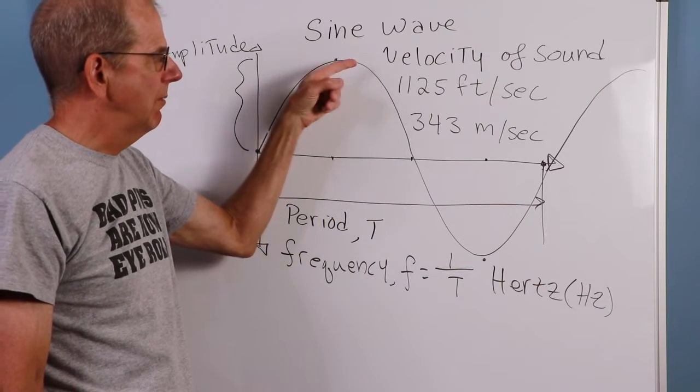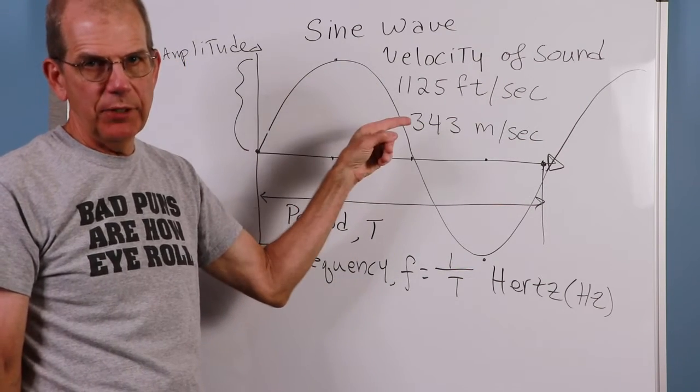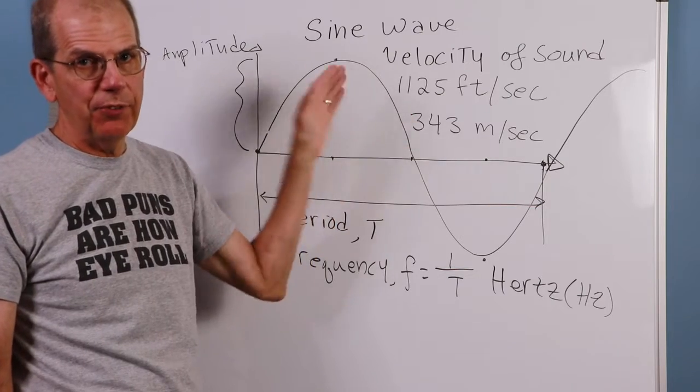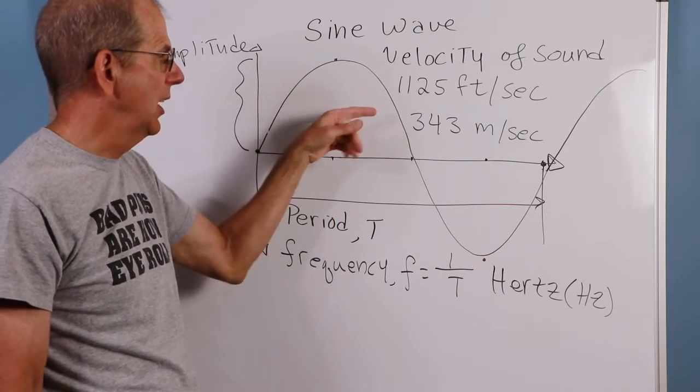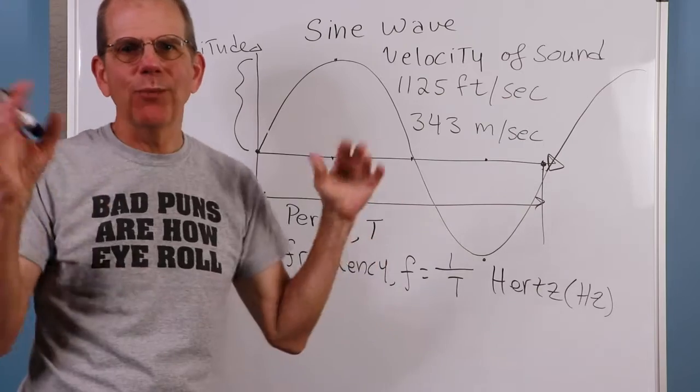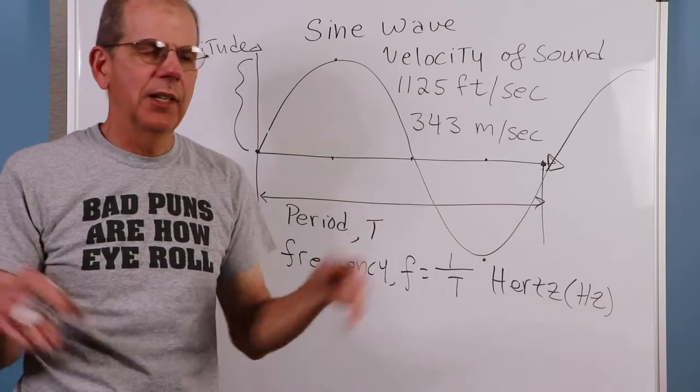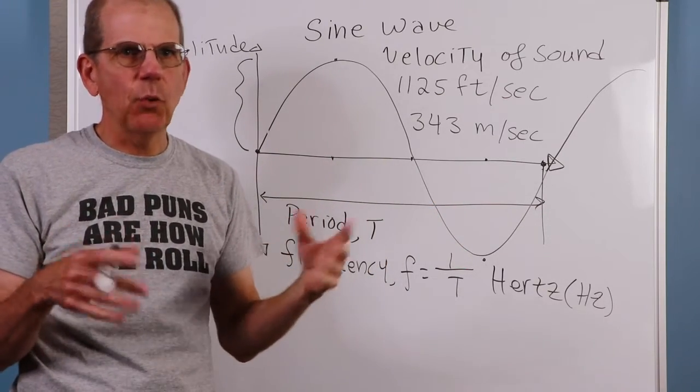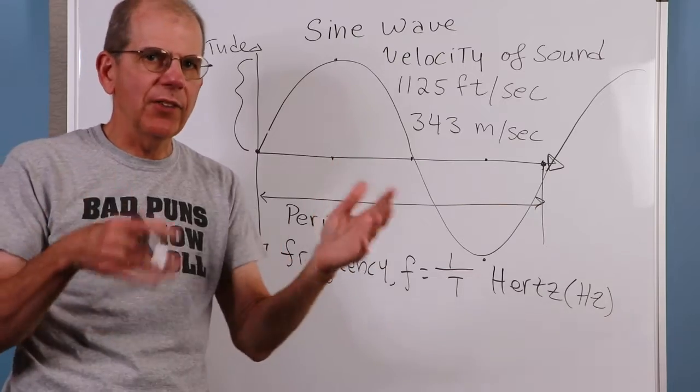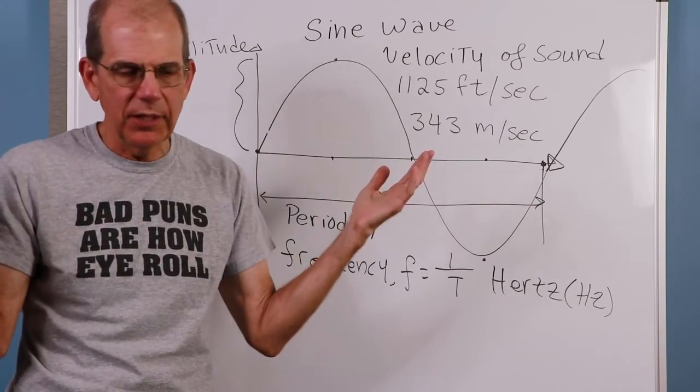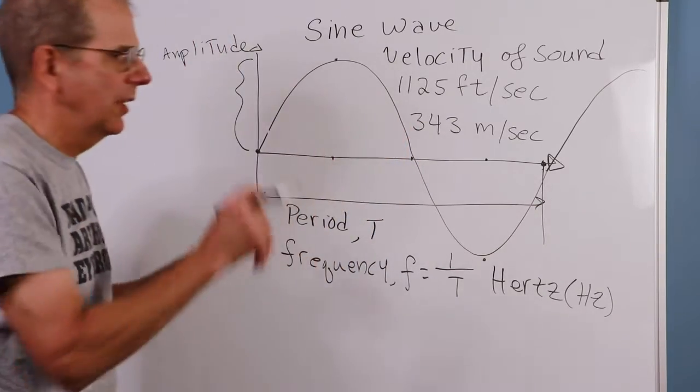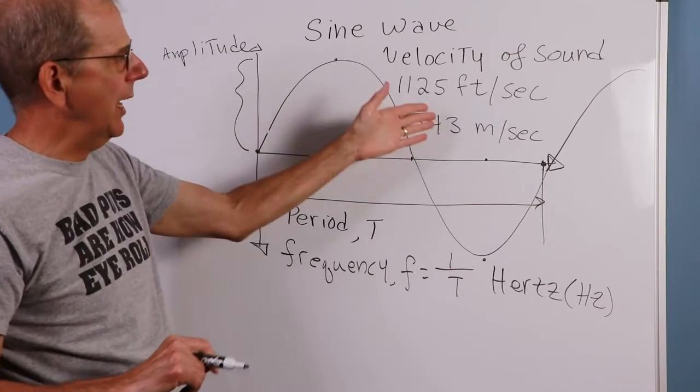This will vary on temperature. It's not a huge variation, but there is a variation due to temperature. So the numbers I'm giving you are at, like, room temperature, 20, 25 degrees centigrade, 70, 75, 80 degrees Fahrenheit, somewhere around there. So we'll see that change a little bit.